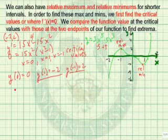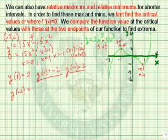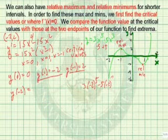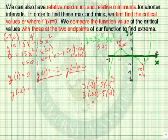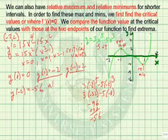But to find the extrema, we also need to look at what happens when x equals negative 2. If we put negative 2 in here, 3 times negative 2 to the fifth minus 5 times negative 2 cubed gives us 3 times negative 32 minus 5 times negative 8, which equals negative 96 plus 40, or negative 56. So this is going to be our absolute minimum.